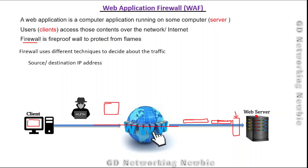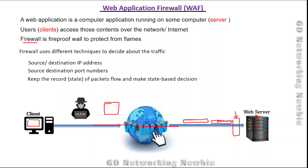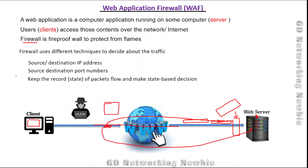The firewall can also make decisions based on source or destination port numbers. Additionally, it can decide based on state — for example, if this machine sent a request to another machine, and traffic comes back as a result, the firewall maintains a state record and can recognize those return packets as belonging to its own request and allow them through.